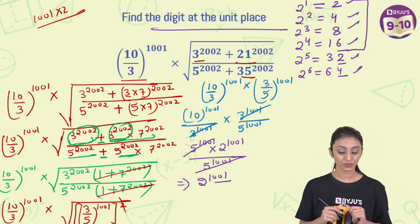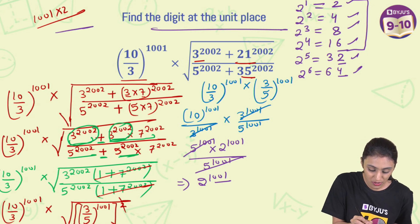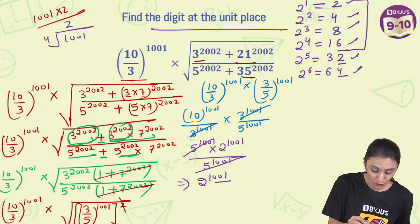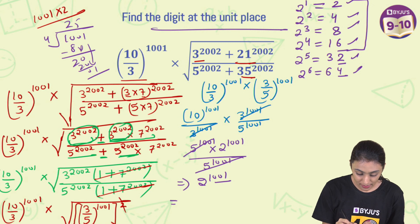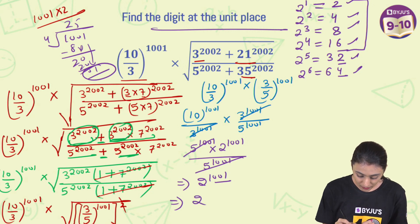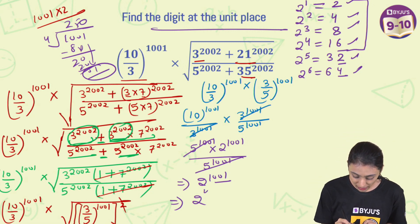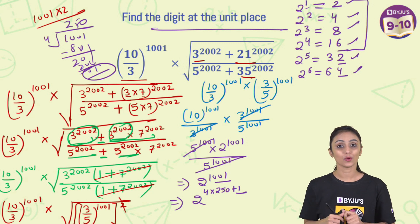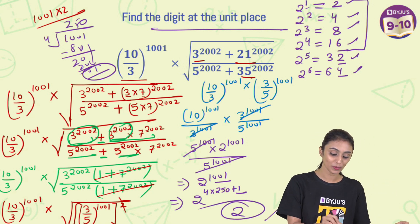The power is 1001. If we divide 1001 by 4: 4 times 250 is 1000, so the remainder is 1. This means 2 to the power 1001 equals 2 to the power (4 times 250 plus 1). Since the remainder is 1, we look at 2 to the power 1, which has a unit digit of 2. So the digit at the unit's place is 2, and that is the final answer.